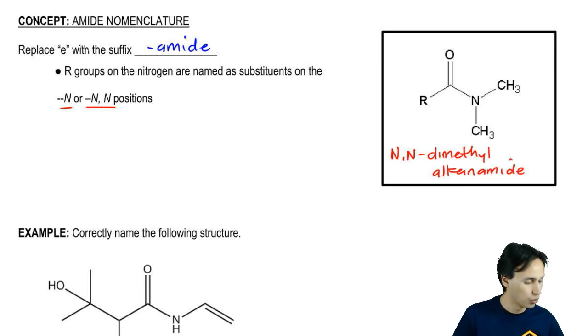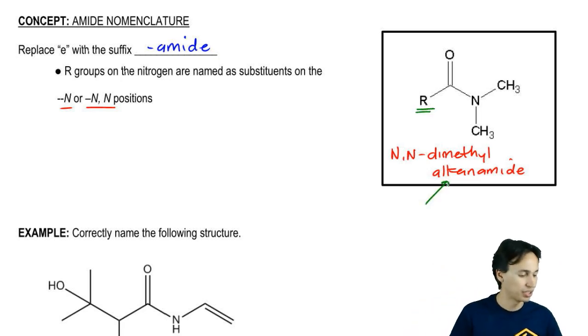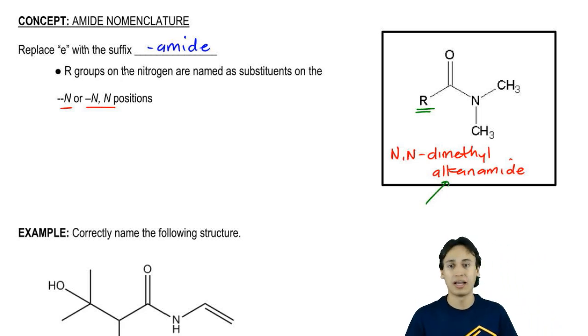Of course, I'm waiting to know what the identity of that R group is to figure out what I put here. You could use common names or IUPAC names. Just remember to change your location descriptions with numbers or Greek letters depending on which one you're using.